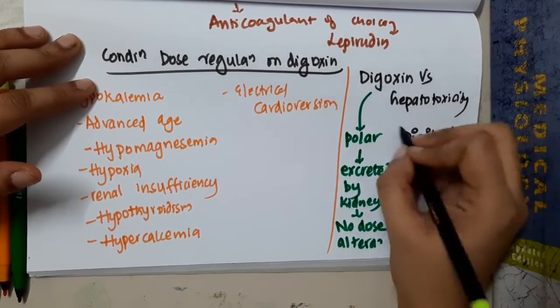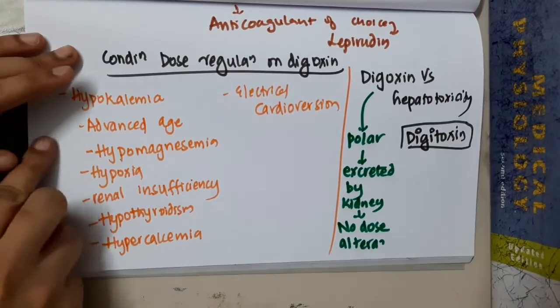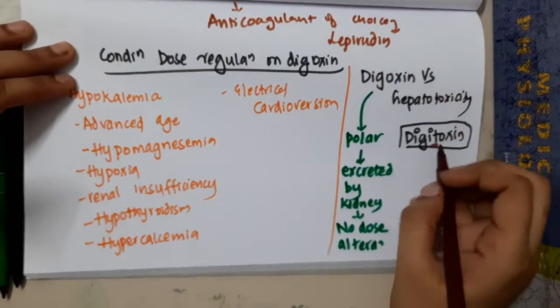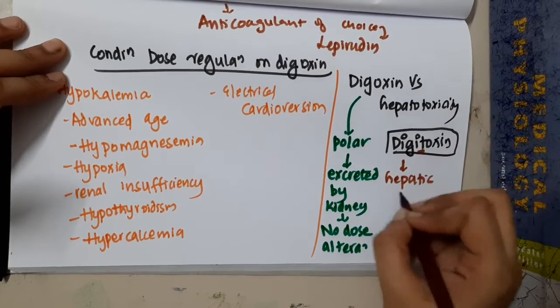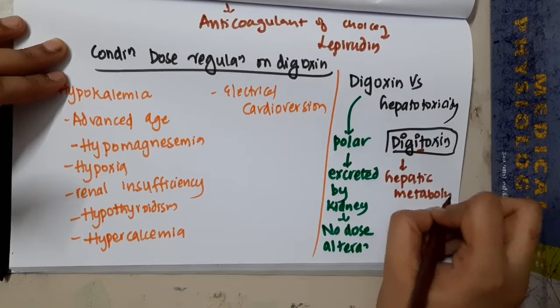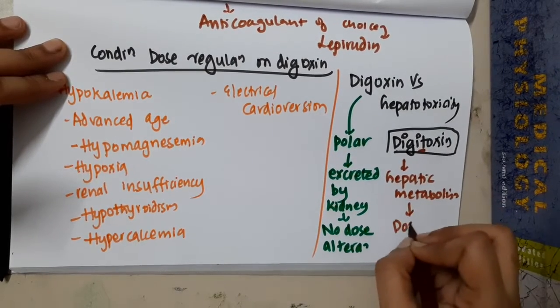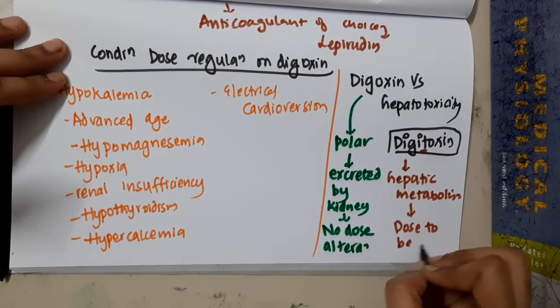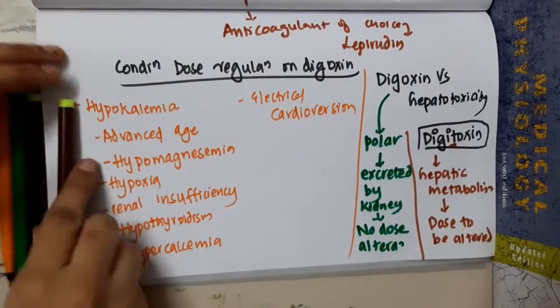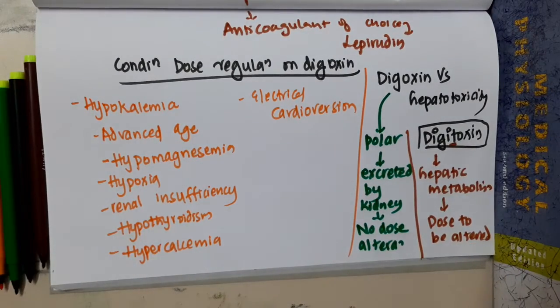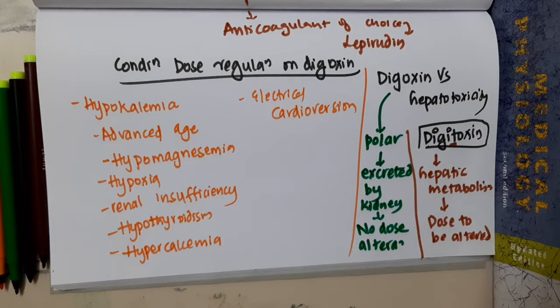If you are talking about digitoxin, it undergoes hepatic metabolism, so dose should be altered in digitoxin. The dose is not needed to be altered in digoxin. So this is about dose regulation in digoxin. Thank you for watching.